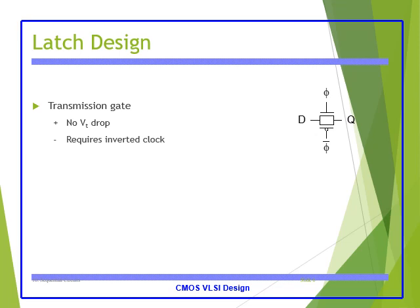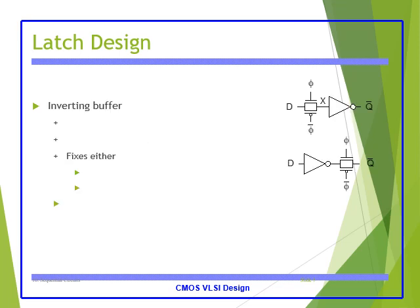With the transmission gate replacing the two transistors, no threshold voltage drop occurs, and an inverted clock is also enabled in the transmission gate. In the latch design, an inverted buffer is added along with one transmission gate and a NOT gate.